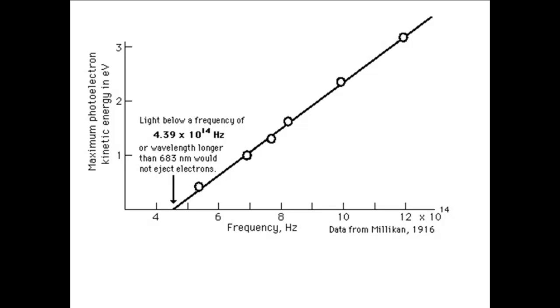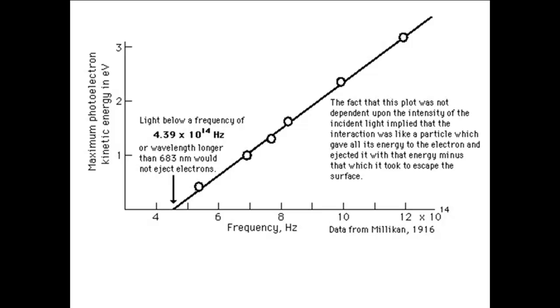This graph shows the results of an experiment similar to Lenard's conducted by Robert Millikan in 1916. It shows the energy of the ejected electrons as a function of the frequency of the light that was shined on the metal. Note two things. First, there is a minimum frequency below which no electrons were emitted. In this case, that frequency is 4.39 times 10 to the 14th hertz. The second thing to note is that the relationship between the frequency of the light and the energy of the emitted electrons is linear. It is as if each particular frequency of light has a specific amount of energy, and some of that energy is used to bring the electrons out of the metal. The electron then has the rest of the energy of the light. The fact that the intensity of the light had nothing to do with the energy of the emitted electrons suggests that each electron is receiving the energy of a particle of light with a specific energy.